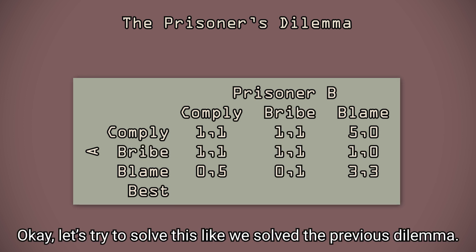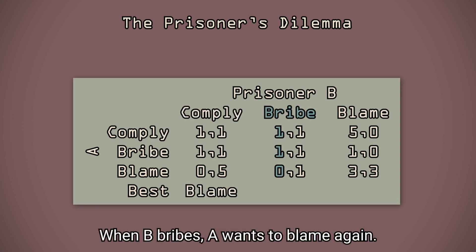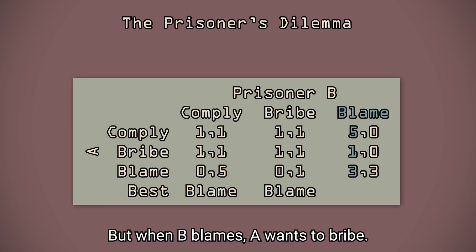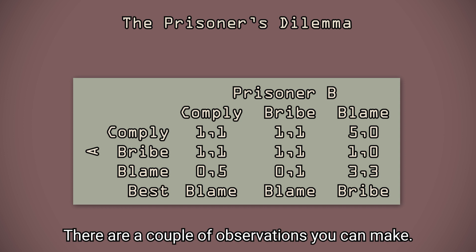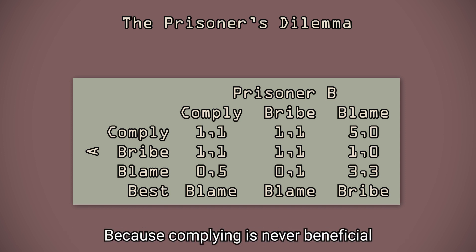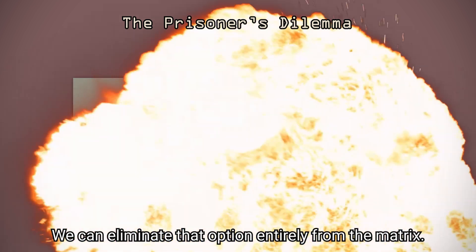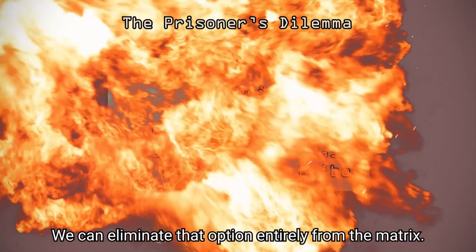Let's try to solve this like we solved the previous dilemma. When B complies, A wants to blame. When B bribes, A wants to blame again. When B blames, A wants to bribe. There are a couple of observations you can make. Firstly, we can simplify this problem. Because complying is never beneficial, we can eliminate that option entirely from the matrix.